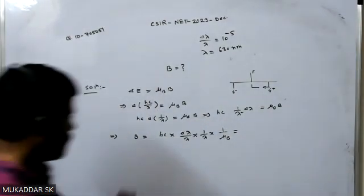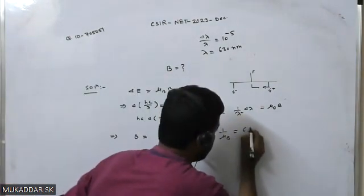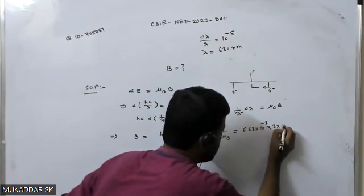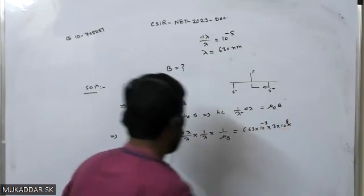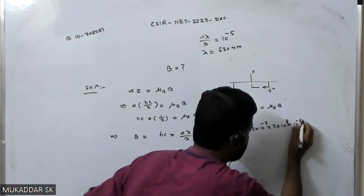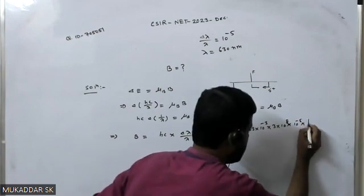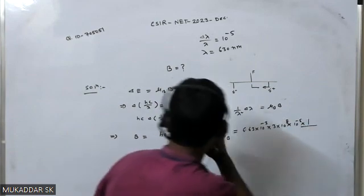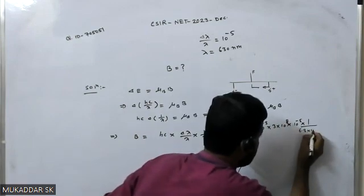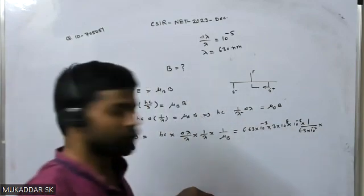Now just let's substitute the values. So you know h is Planck's constant, this is 6.63 into 10 to the power minus 34. Then c is the speed of light in SI unit, that will be 3 into 10 to the power 8. Then this delta lambda by lambda is provided, 10 to the power minus 5.